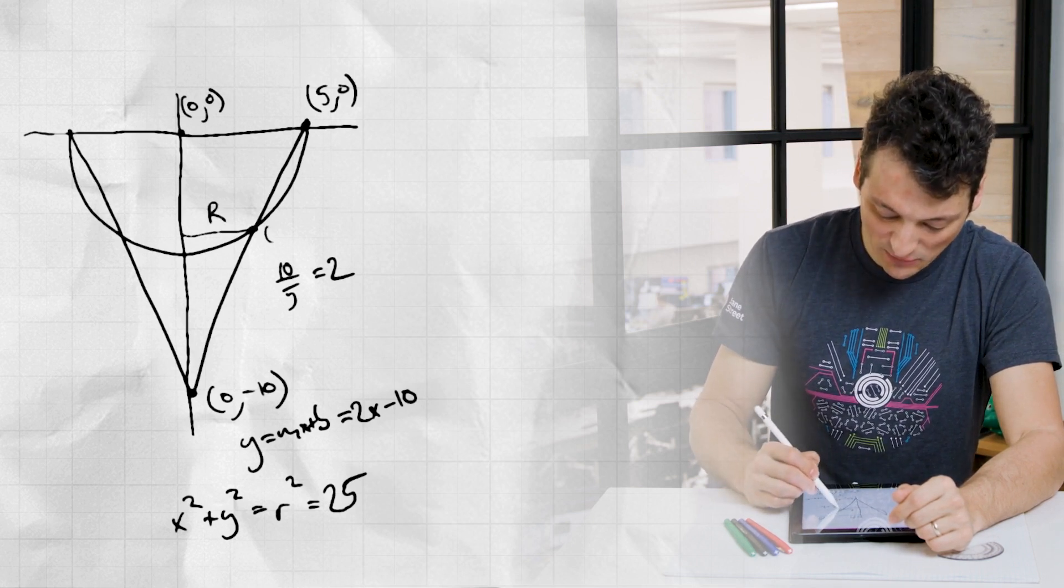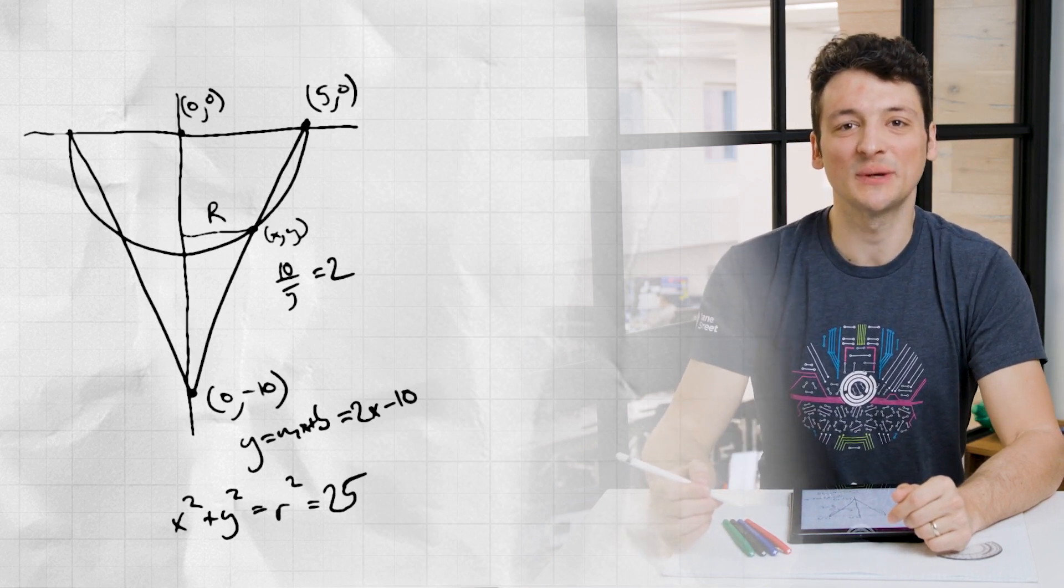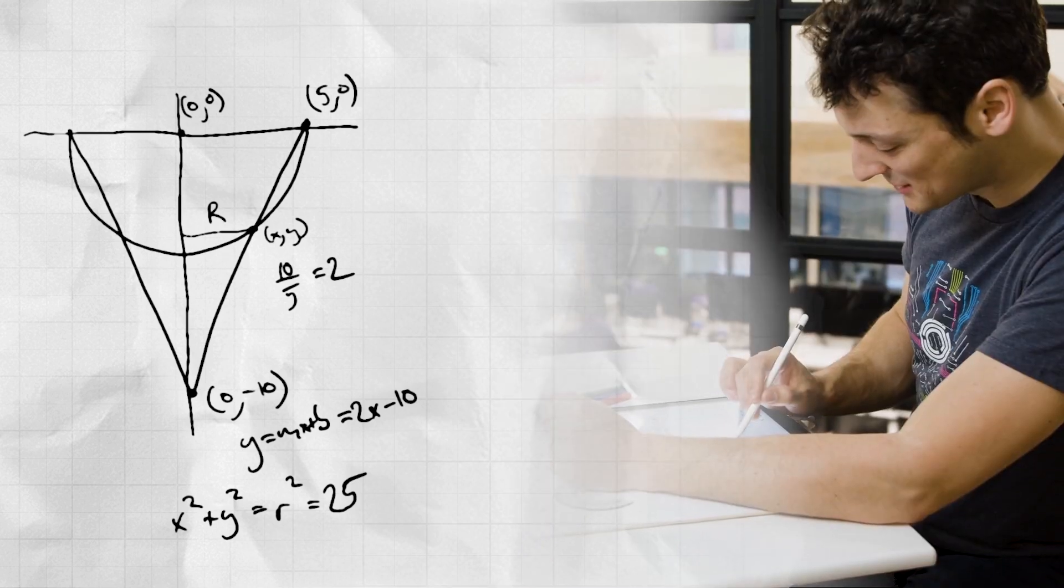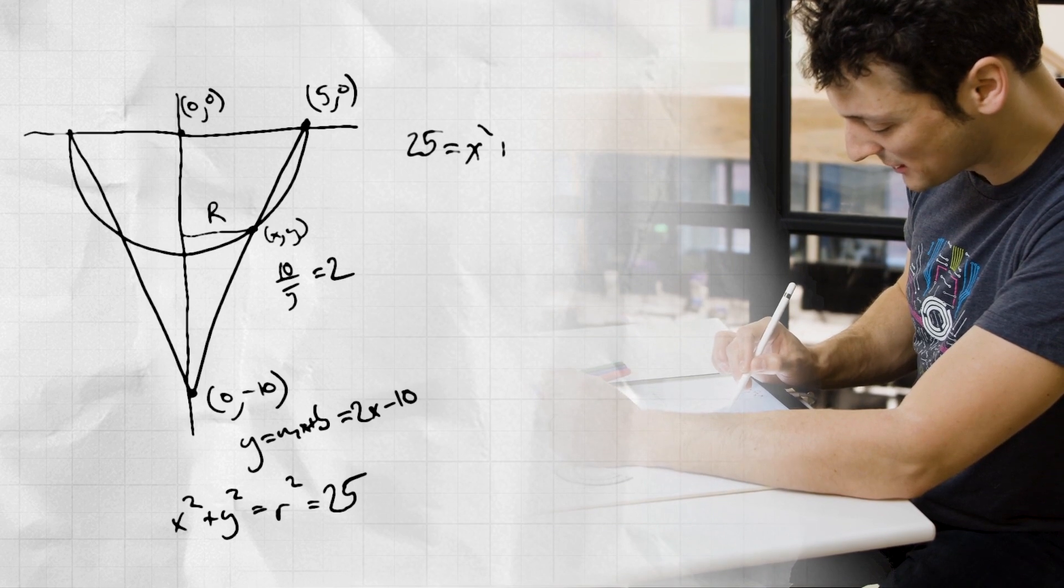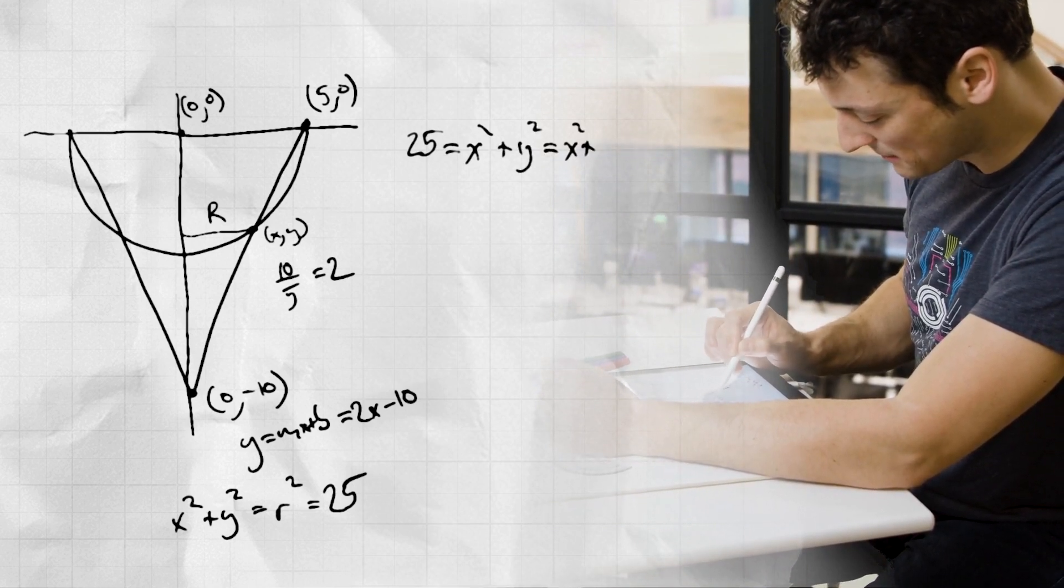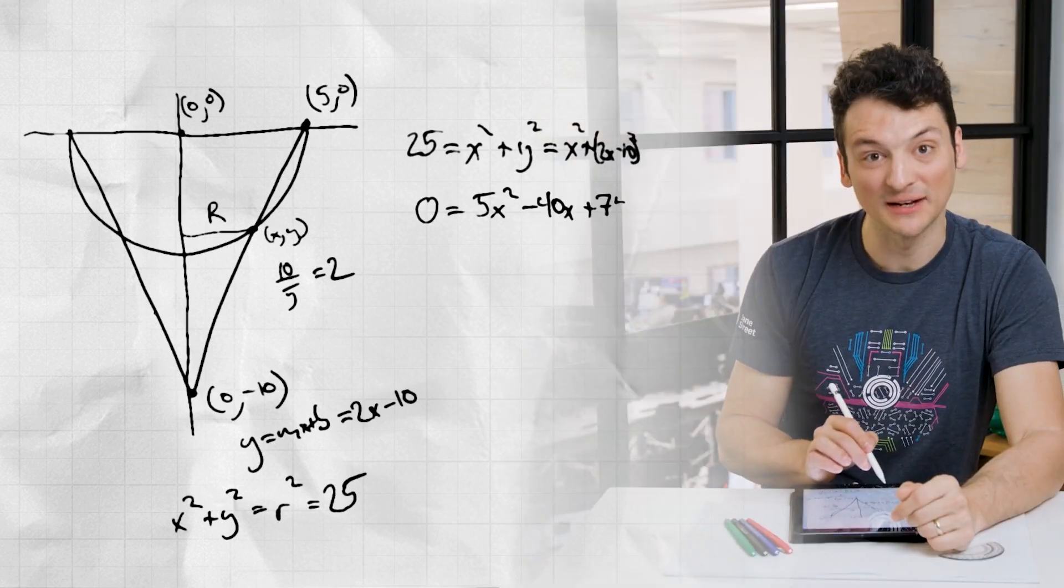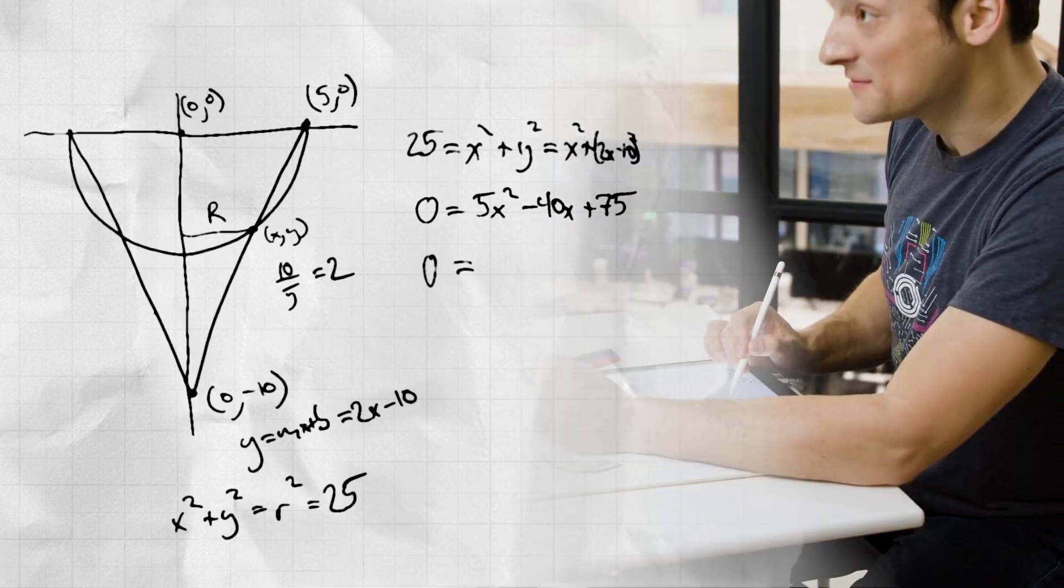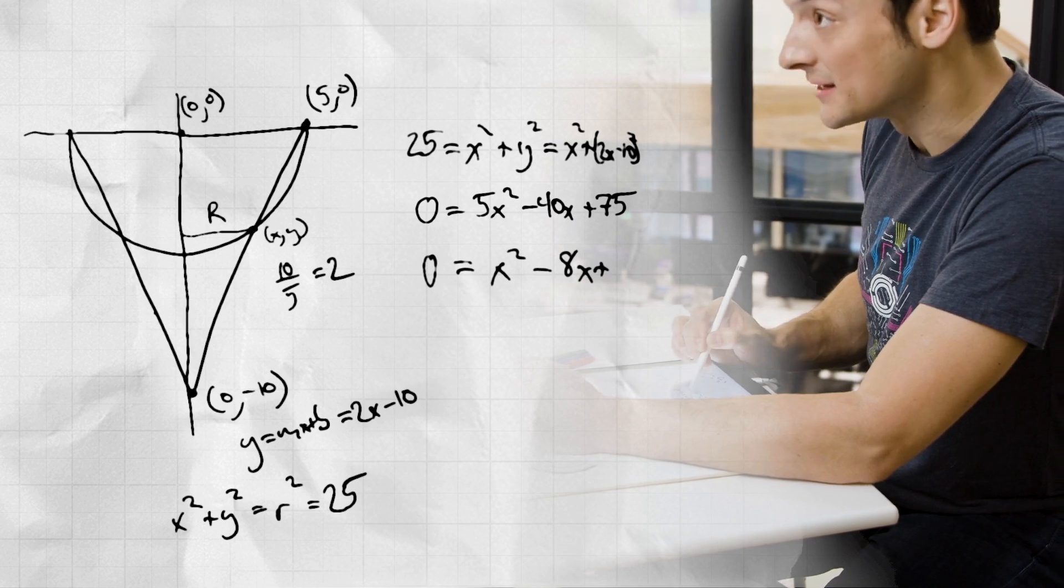Now we are curious about the radius r of the lower circle of intersection of the cone and sphere. That means we want to solve for the point xy, where both of these equations hold. So we can plug the value for y we get from the cone line into the circle equation, 25 equals x squared plus y squared equals x squared plus (2x minus 10) quantity squared. We've eliminated y from the equation. This solves to 0 equals x squared minus 8x plus 15.